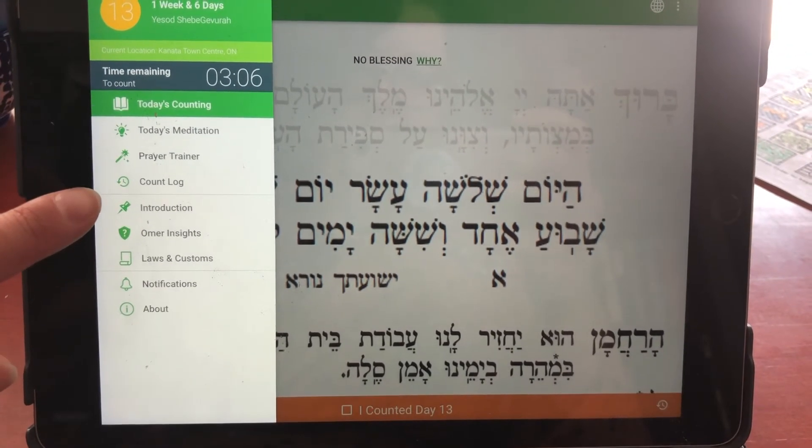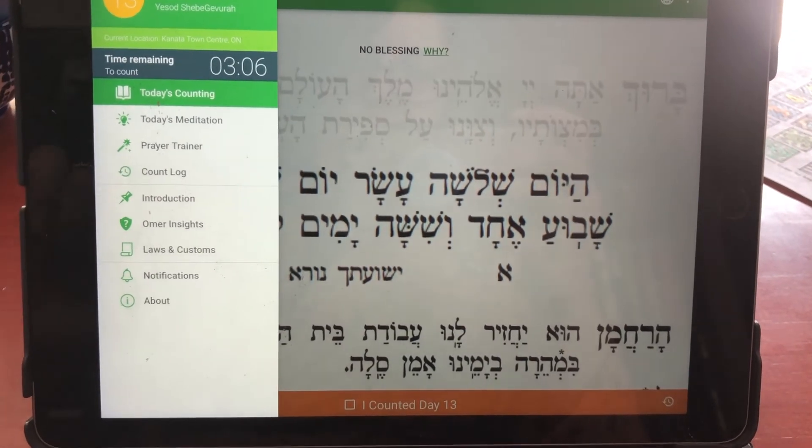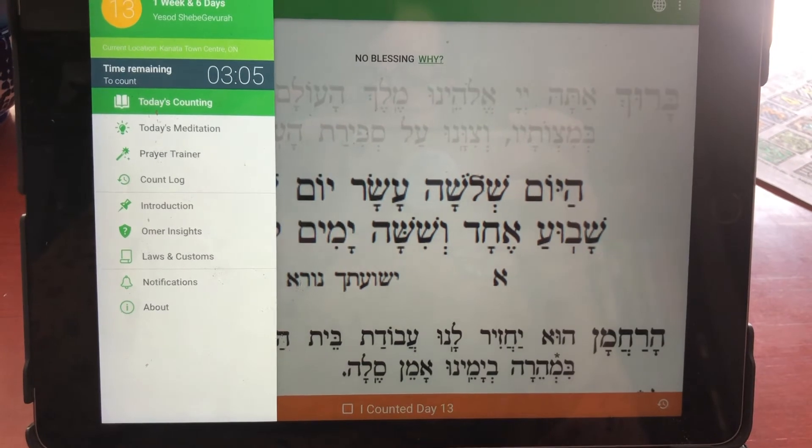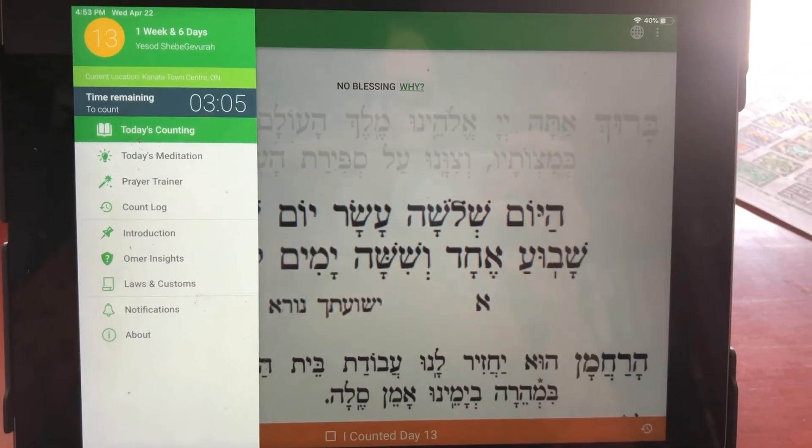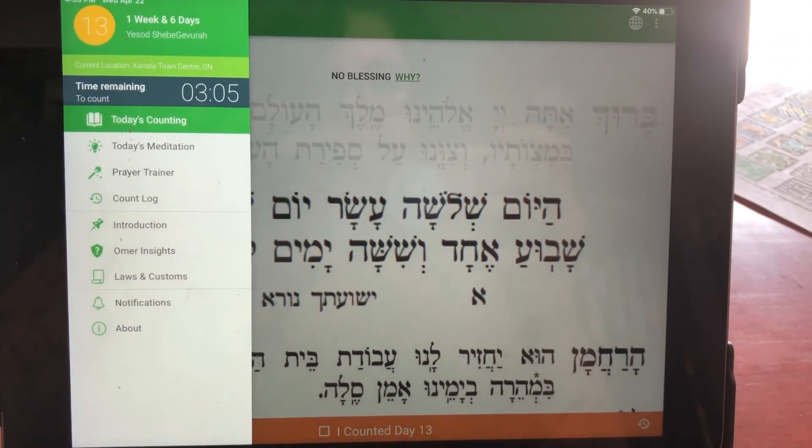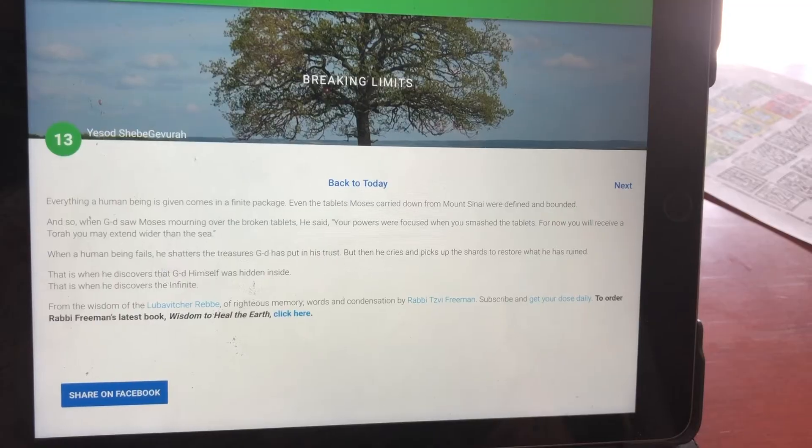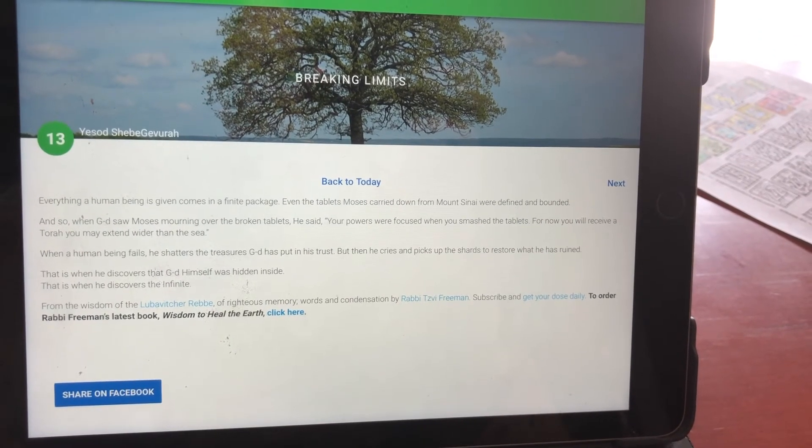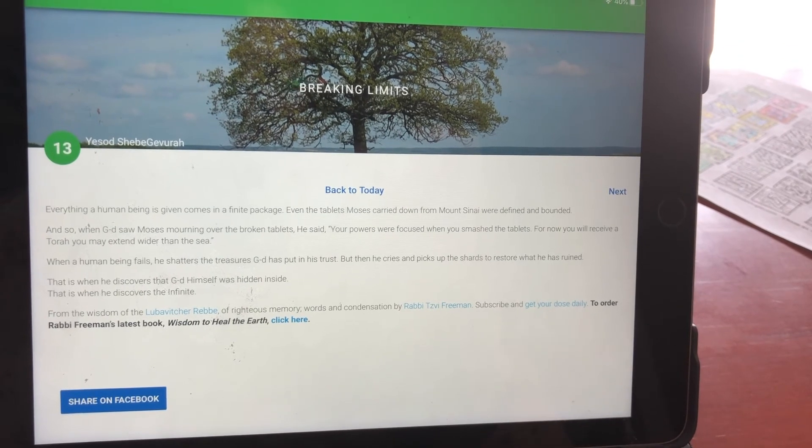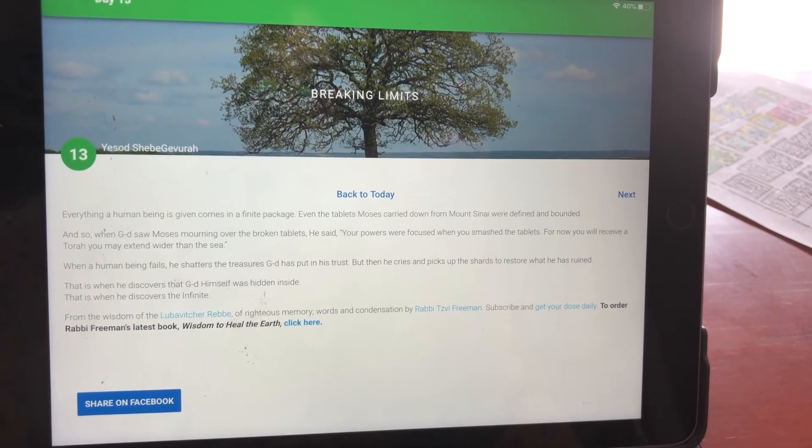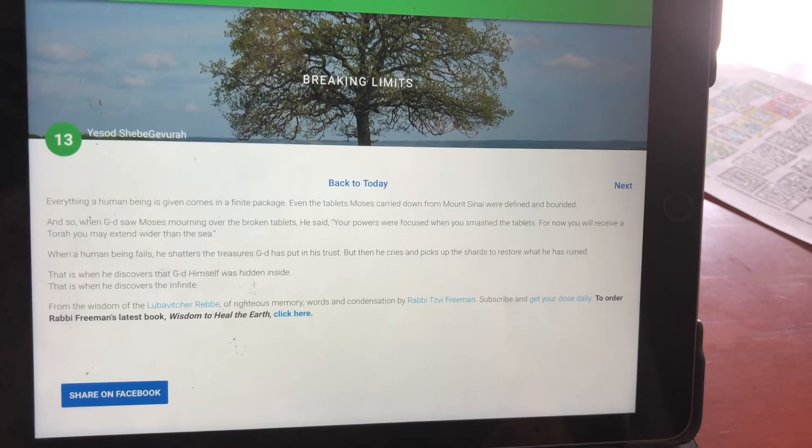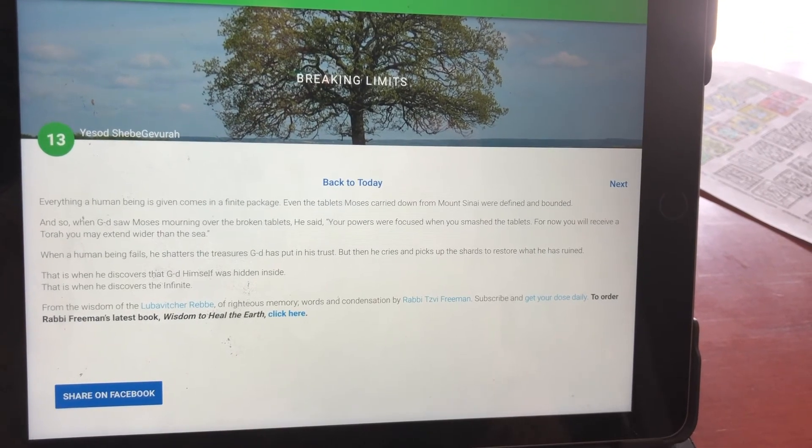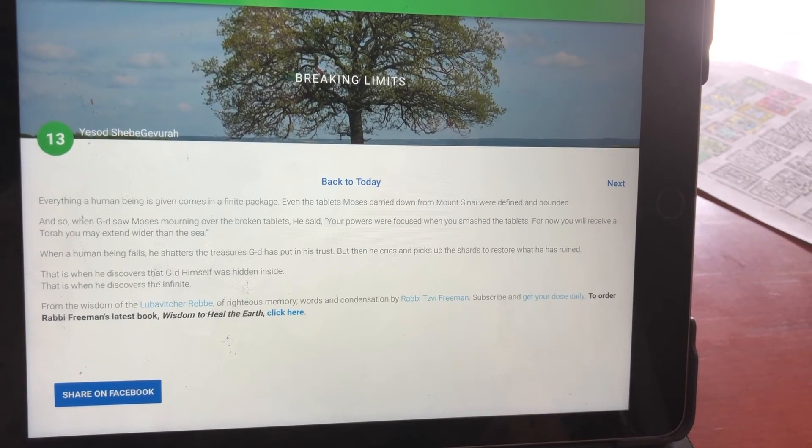I can keep track of what I have counted. I can even practice the prayer in English transliteration or in Hebrew. It can set an alarm to tell me when to do things, and it will even give me daily meditations to think about for wherever we are in the counting of the Omer, and it will tell you where the source for that meditation was, and it can even delve a little deeper into some Kabbalah or into different sects of Judaism, however you want to go about it.